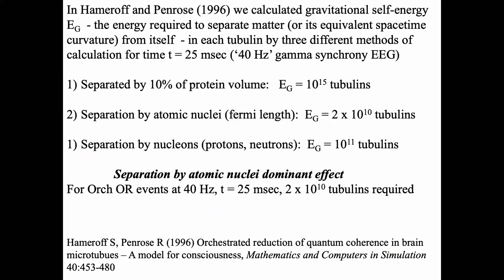How many tubulin did we need? Well, that depends on the time at which collapse will occur. We had to decide how we were going to get E sub G out of microtubules — was it the whole protein separated from itself, at the level of atomic nuclei, or at the level of nucleons, protons and neutrons? Roger gave me the formula and we calculated these, finding the dominant effect would be if the superposition occurred at the level of the atomic nuclei. For a time T of 25 milliseconds at 40 hertz, this turned out to be about 2 times 10 to the 10th tubulin — which isn't very much, since there are a billion tubulin per neuron. Plus, 25 milliseconds is a long time to avoid decoherence.